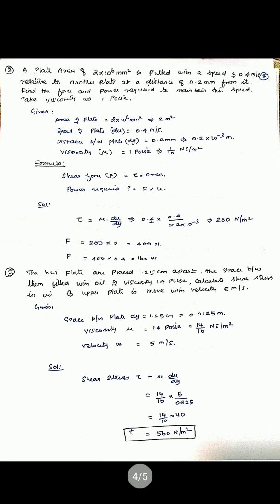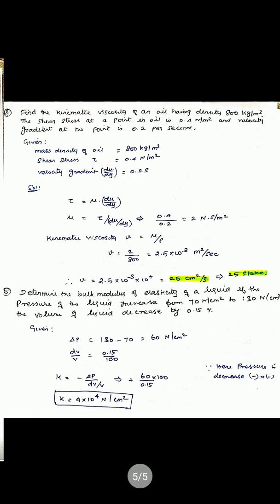Problem 3: Two horizontal plates are placed 1.25 cm apart, the space between them filled with oil of viscosity 14 Poise. Calculate the shear stress in the oil if the upper plate moves with velocity 5 m/s. dy equals 1.25 cm equals 0.0125 m; mu equals 14/10 equals 1.4 N·s/m². Shear stress tau equals mu into du/dy equals 1.4 × 5 / 0.0125 equals 560 N/m².